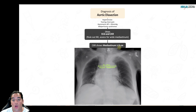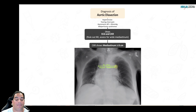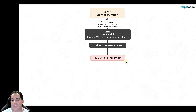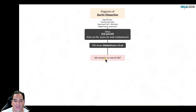The next diagnostic step depends on hemodynamic stability. If the patient is hemodynamically unstable or at risk for contrast-induced nephropathy — for example with end-stage renal disease — you should not delay care to send them to the CT scanner. Instead, perform a bedside transesophageal echocardiogram to look for a true lumen, false lumen, and intimal flap consistent with dissection.